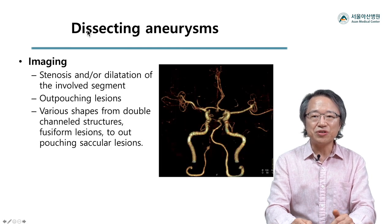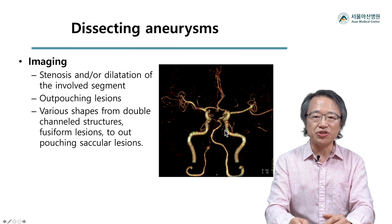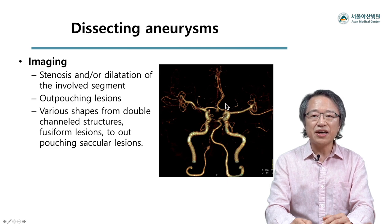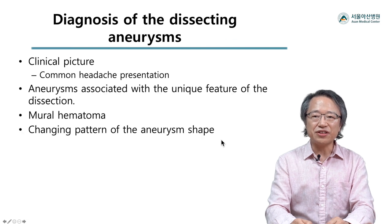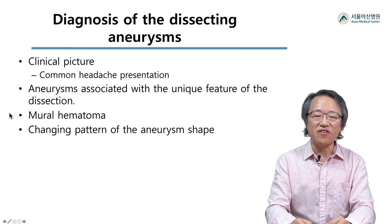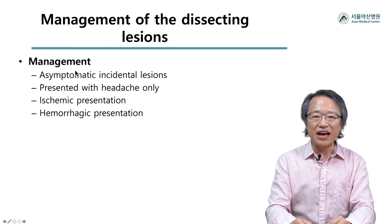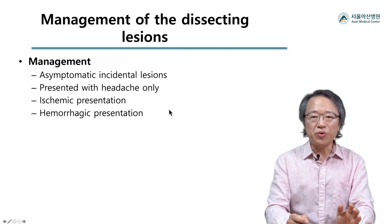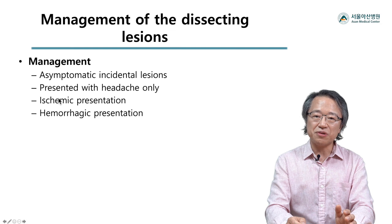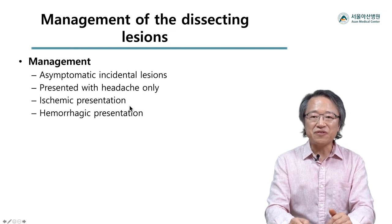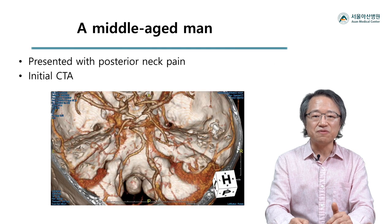Aneurysms related to arterial dissection: the most common location is the intracranial segment of the distal vertebral artery, followed by intradural distal ICA or MCA, ACA-A2 segment, PCA-P2 segment junction, and so on. Diagnosis of the dissecting aneurysm is rather straightforward given its common association with headaches and unique imaging findings. Management could be strategic since its natural history can be diverse. Lesions with benign presentation can be observed without intervention; however, imaging follow-ups are essential since they may show rapid morphological change.